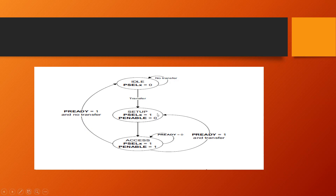In the setup state, PSEL is one but PENABLE is zero. This is a common interview question: PSEL=1 and PENABLE=0 indicates the setup state. In the idle state, both PSEL and PENABLE are zero and all signals are at their reset values. After setup, in the next clock cycle the bus moves to the access phase. In the access phase, both PSEL and PENABLE are one, and the actual transmission of data takes place between master and slave.